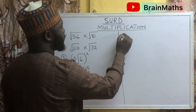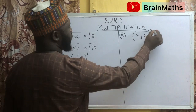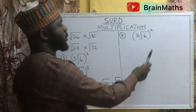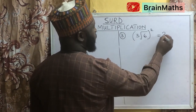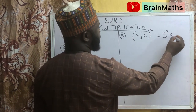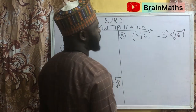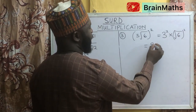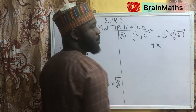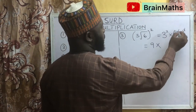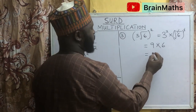Question number 3 says: 3 root 6, squared. Don't forget that whenever we have a square, it means this number is carrying a square — 3 squared — multiplied by another root. The square of 3 is 9, multiplied by square root, and the square are meeting here, so the two are going to cancel out each other, and we are left with ordinary 6. And 9 times 6 is going to give us 54.